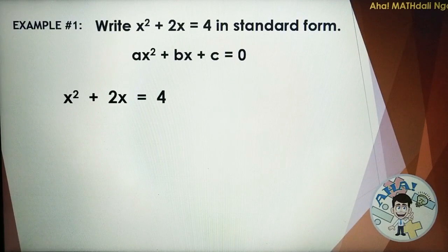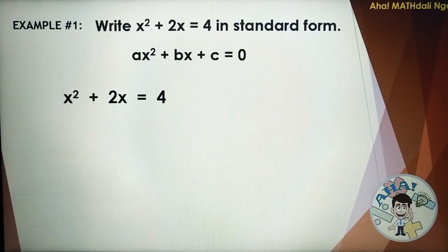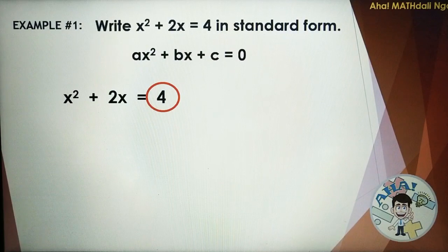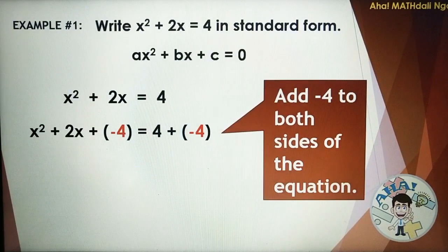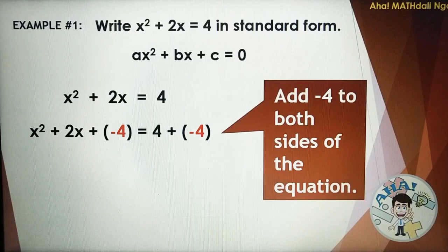Observe that in the quadratic equation in standard form, the right side of the equation must be equal to 0. In our example, we need to make this positive 4 become 0. We do that by adding negative 4 to both sides of the equation, so it becomes X squared plus 2X plus negative 4 is equal to 4 plus negative 4, applying the addition property of equality.